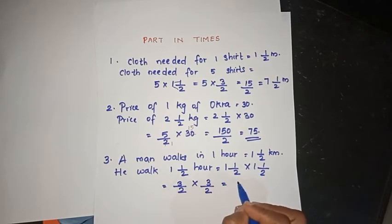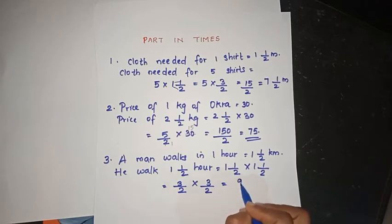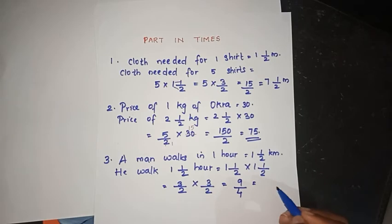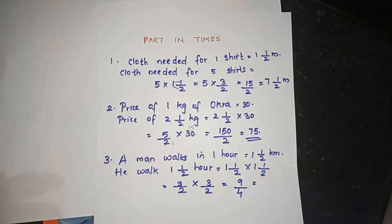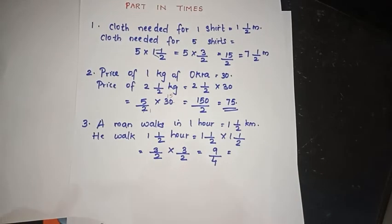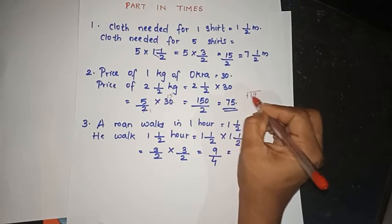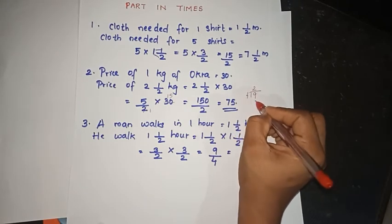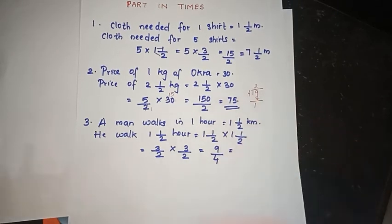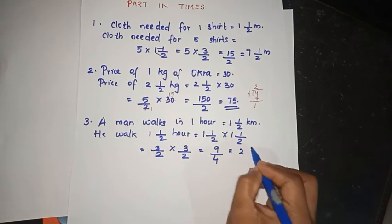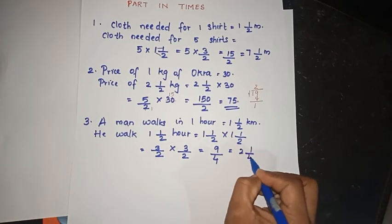9 by 4 — we divide: 4 goes into 9 twice with remainder 1. So the answer is 2 and 1 by 4 kilometers.